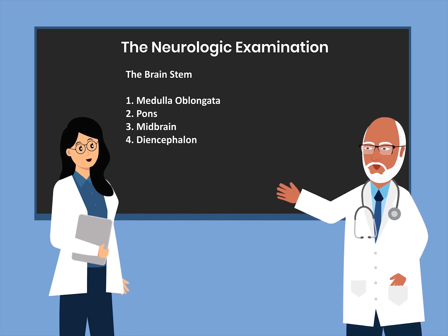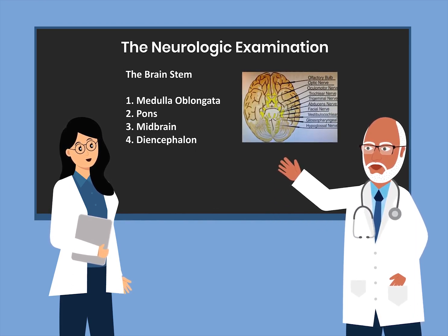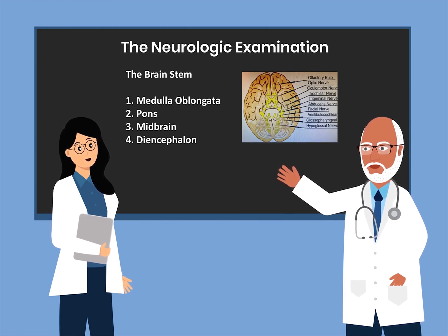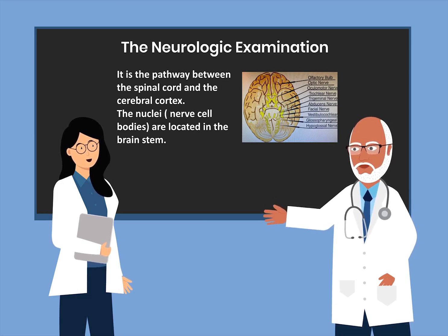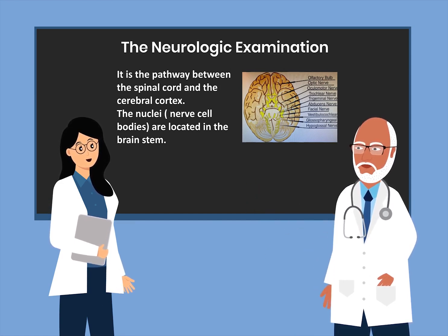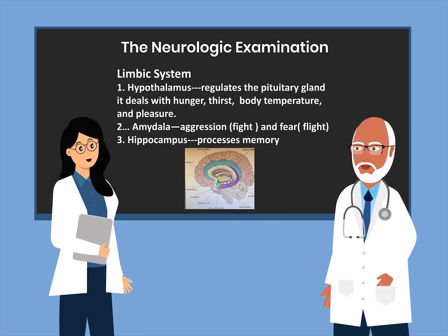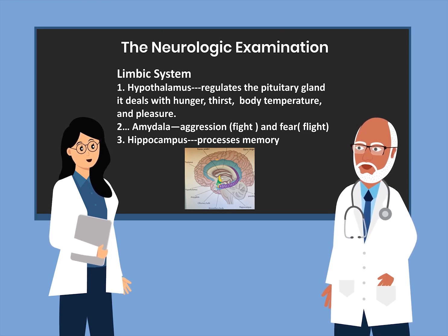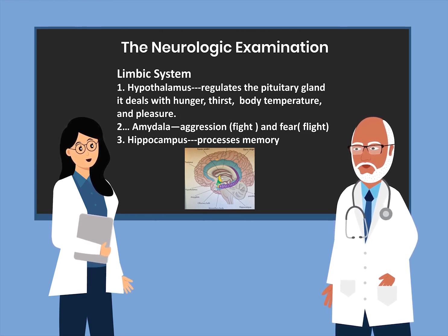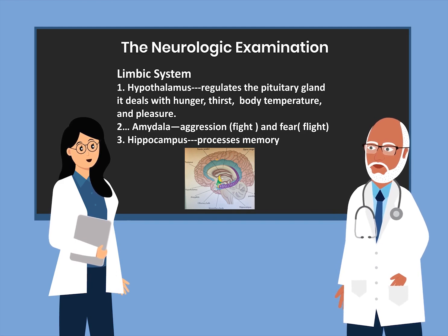The brainstem includes the medulla oblongata, the pons, the midbrain, and the diencephalon. It is the pathway between the spinal cord and the cerebral cortex. The nuclei or cell bodies are located in the brainstem. The limbic system includes the hypothalamus, which regulates the pituitary gland and deals with hunger, thirst, body temperature, and pleasure. It also includes the amygdala, which is involved in aggression and fear, and the hippocampus, which processes memory.